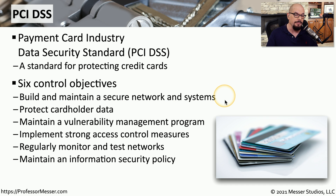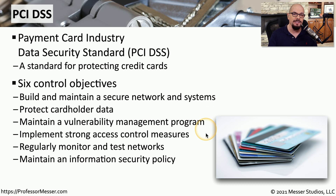The first objective is that you need to be able to build and maintain a secure network and systems. If someone is sending credit card information, we want to be sure that nobody can look into your network or your systems and see that credit card detail. The cardholder data as part of that transaction needs to be protected, and there needs to be some type of management of vulnerabilities so that all of your systems are always up to date and patched. We also want to manage who would have access to this credit card information, so every organization that stores credit cards needs to have a strong access control measure in place, along with ongoing testing.